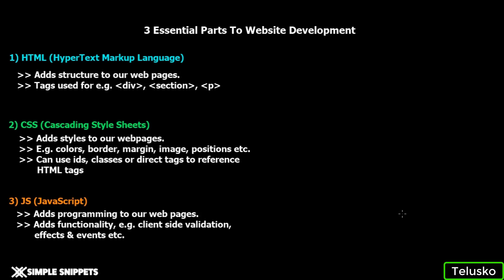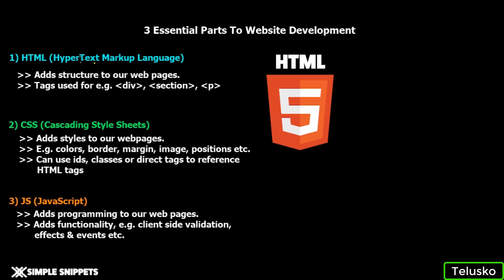When we start off with web development — developing a website from scratch — there are three main aspects to a basic website. First, we have HTML, which is HyperText Markup Language. HTML adds structure to our web documents using tags such as division, section, heading, and title. HTML is not a general-purpose programming language — you cannot use if-else, you cannot have returns or object-oriented properties. It is just a markup language used to give structure to our web document.